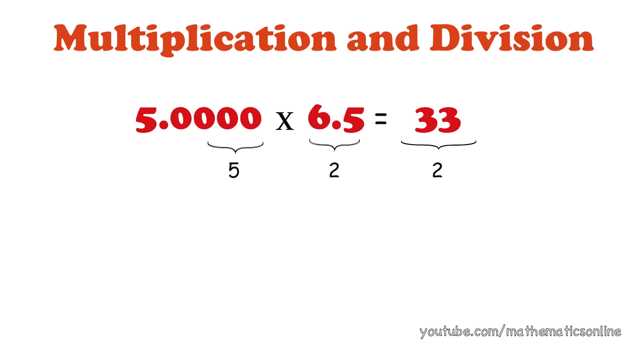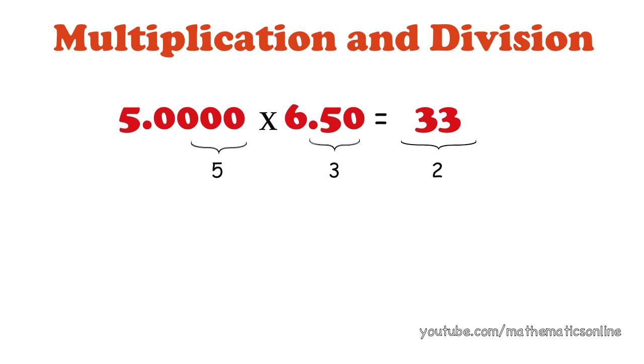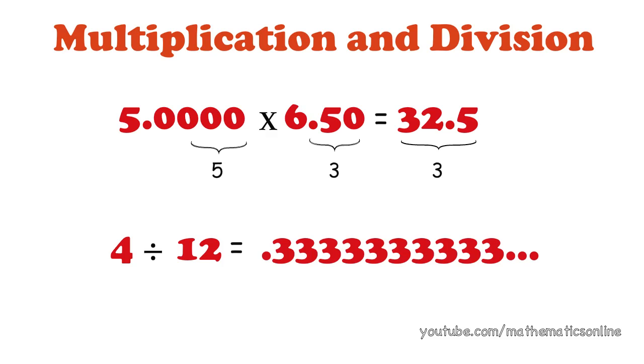If the lowest amount of significant figures is 3, then the answer would have three significant figures. The same rules apply to division. If we divide 4 by 12, the computer tells us that the answer is .3333 and so on. The lowest number of significant figures that we have is 1. Therefore, our answer should have only one significant figure.